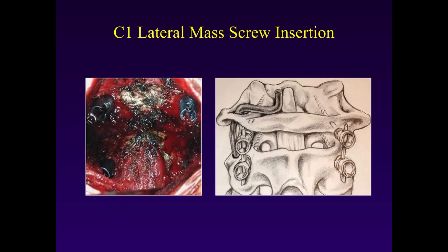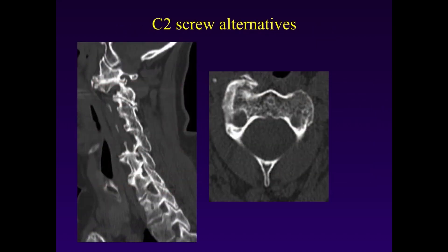The same concern applies to C1 lateral mass screw insertion. This dissection must be performed carefully so as not to injure the vertebral artery. We must also know alternatives to C2 screw placement — for instance, C2 translaminar screws are a viable alternative when there is anomalous vertebral artery anatomy.